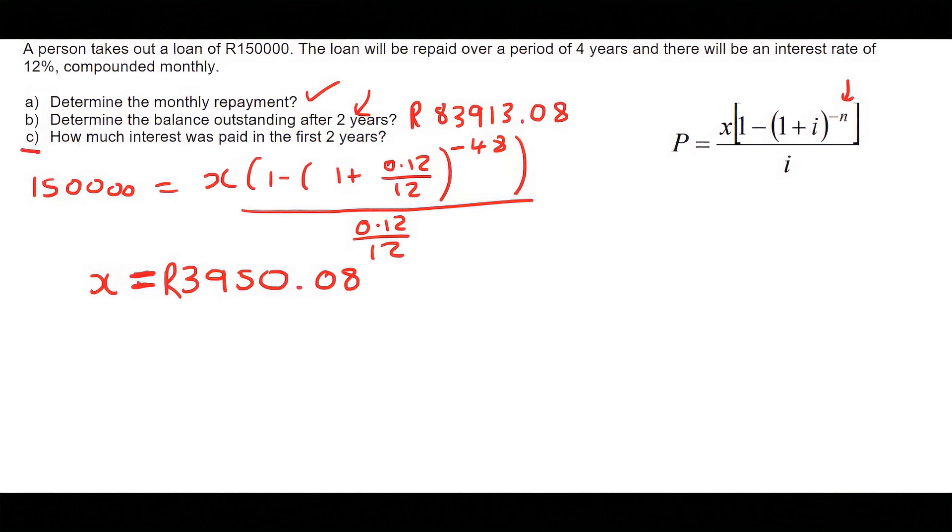This person has paid back the bank 3,950 Rand every single month for two years. How much would that be? So let's go person paid back.